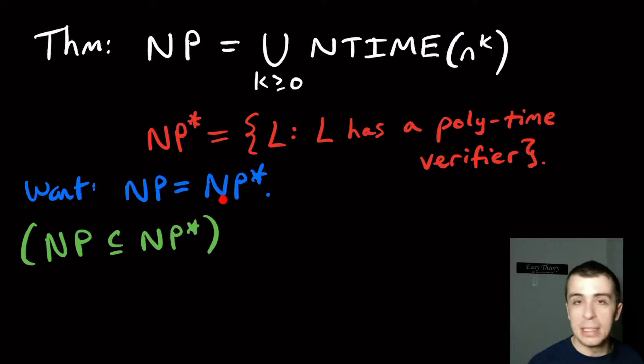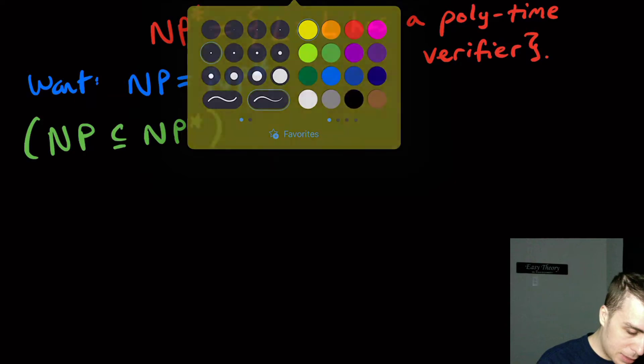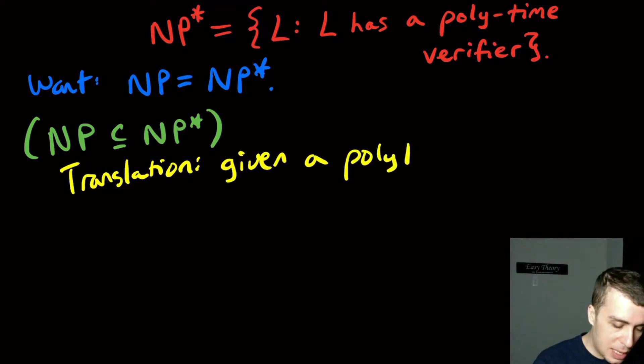So the tried-and-tested way is to show that one is a subset of the other. So let's do the first direction, which says that if I have a language that is decided by a non-deterministic polytime machine, then I can make a verifier for the same language. So the translation here, we're going to be given a polytime non-deterministic Turing machine.